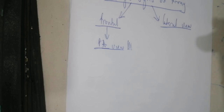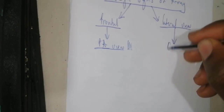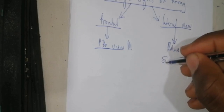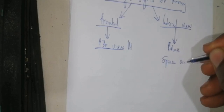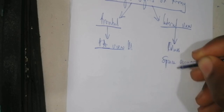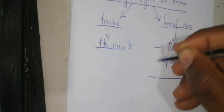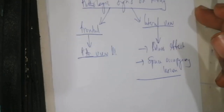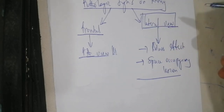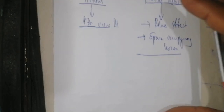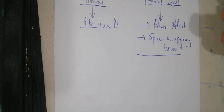On the lateral view, the pathologies you visualize are mostly mass pathologies or space occupying lesions. Every time you think of a mass effect or a space occupying lesion, you need to do the lateral view — either the left or the right lateral view. This is particularly useful in centers where you don't have ECG equipment.